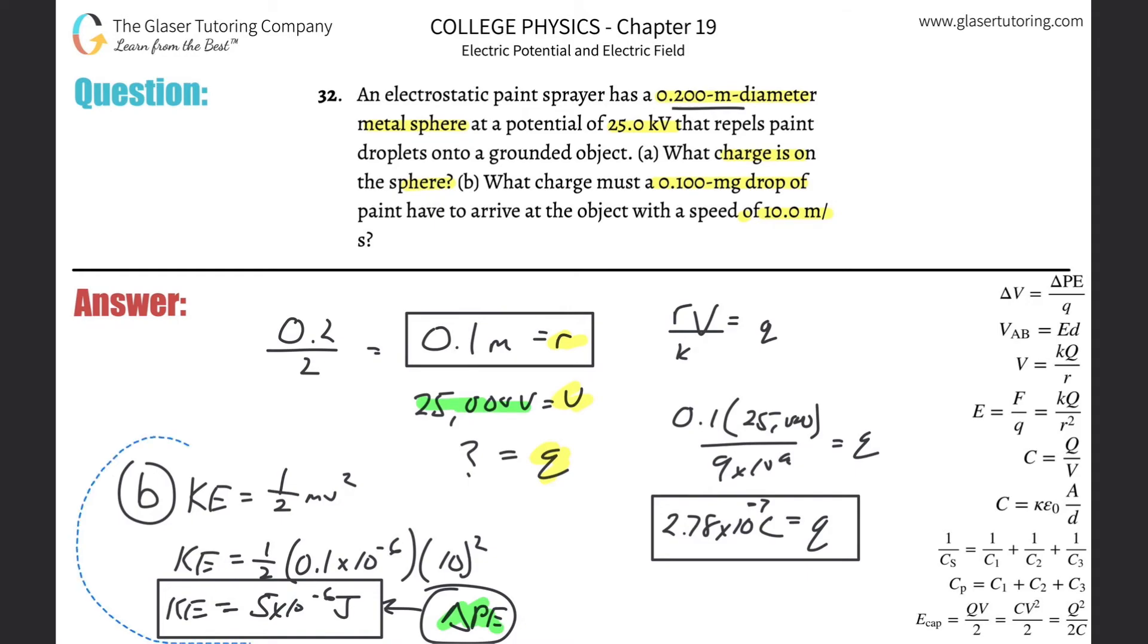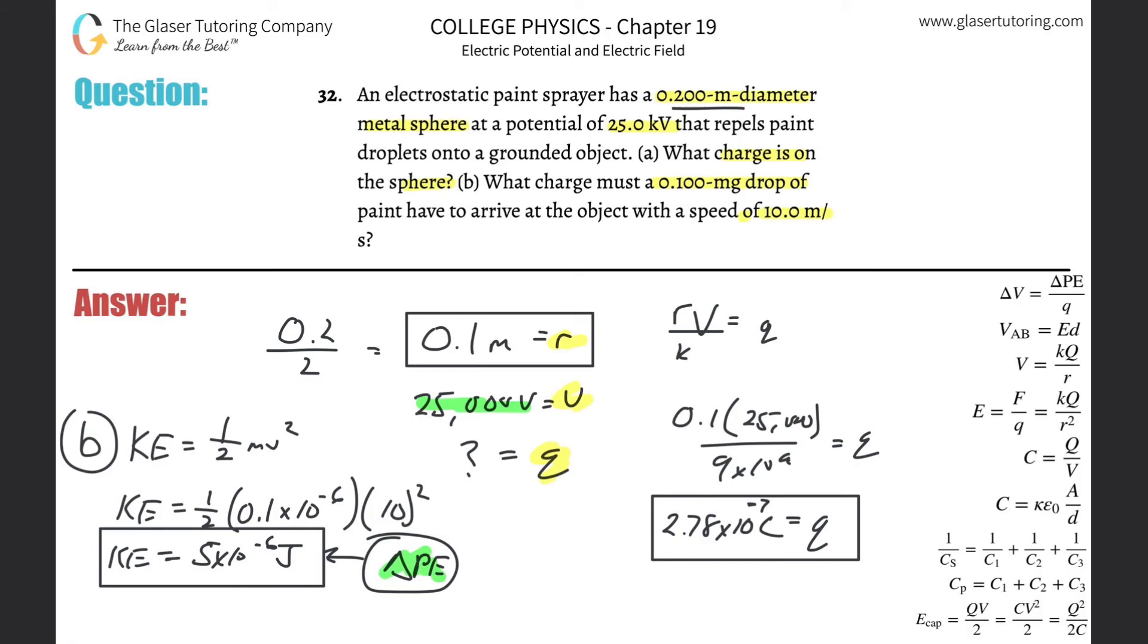So here is our second formula that we need. And I see that I cannot, there we go. So the second formula is going to be the change in voltage is equal to the change of the potential energy all divided by then that charge. Solve this for Q.